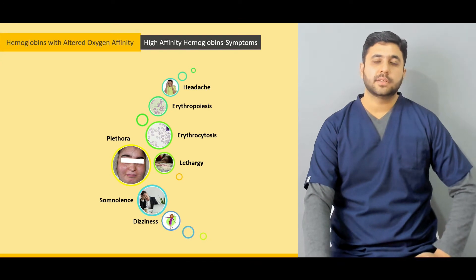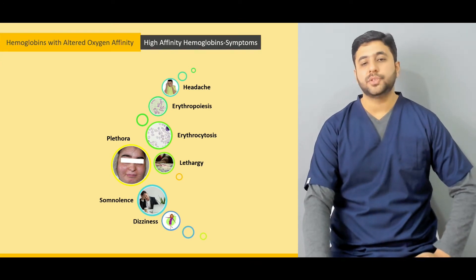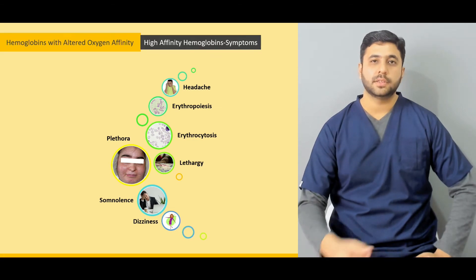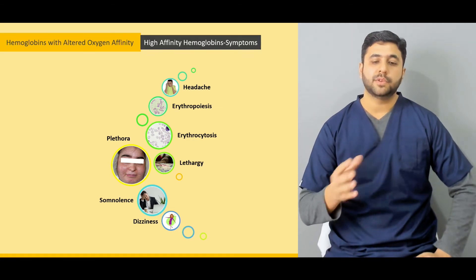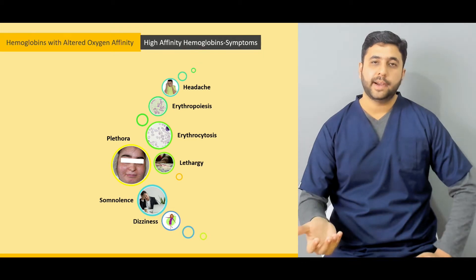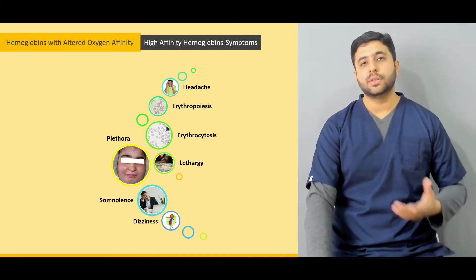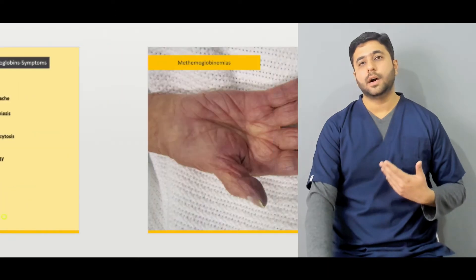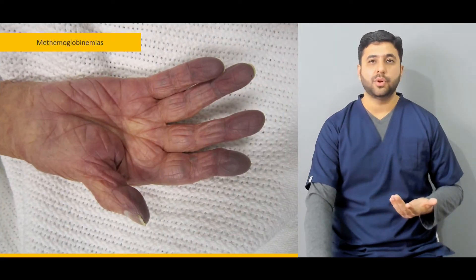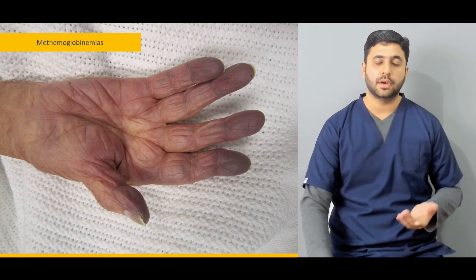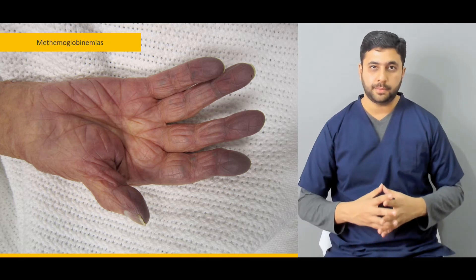Then we are going to discuss certain specific symptoms. In patients with high affinity hemoglobin, what are the underlying pathologies? How do the clinical symptoms of erythrocytosis, plethora, or headache develop? What is the pathophysiology? And on the other hand, how does someone who has a low affinity hemoglobin formation develop cyanosis?